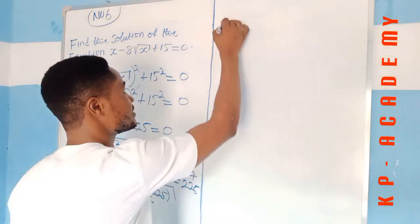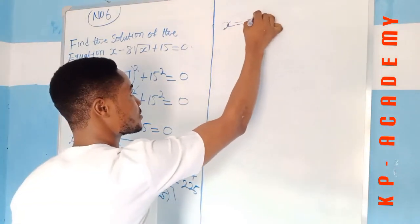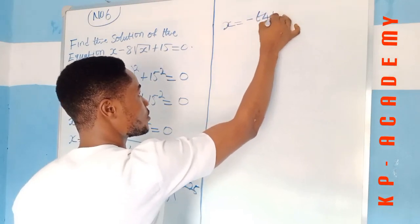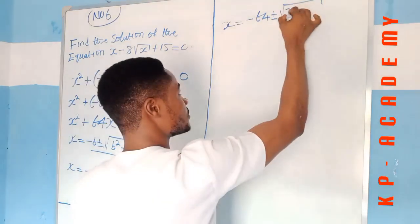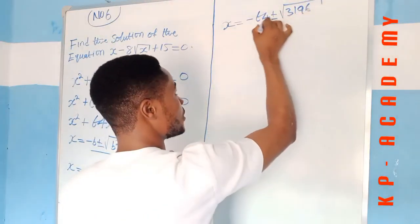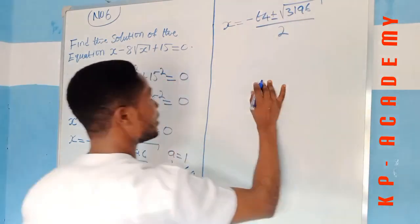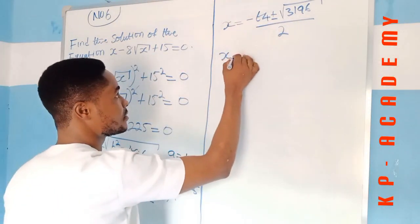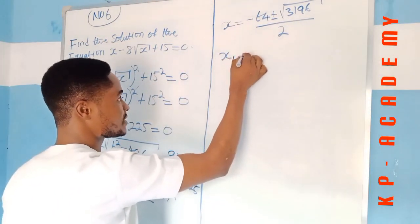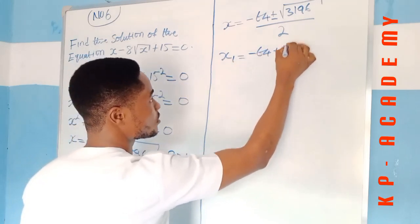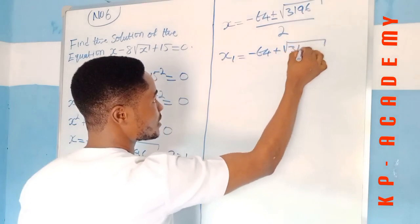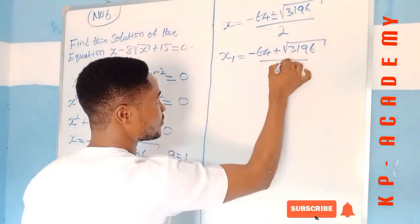Therefore, x is equal to minus 64 plus or minus square root of 3196 all over 2. Hence, x is equal to minus 64 minus square root of 3196 all over 2.